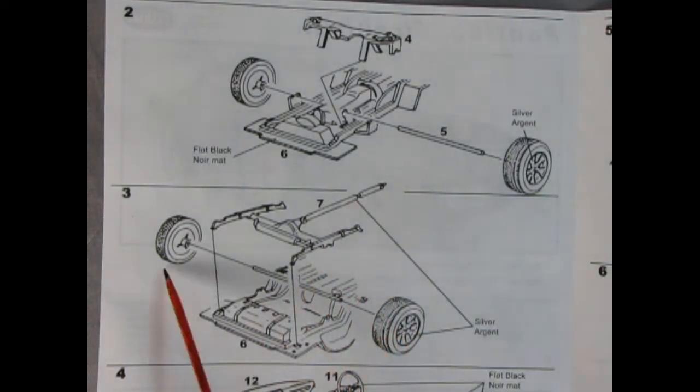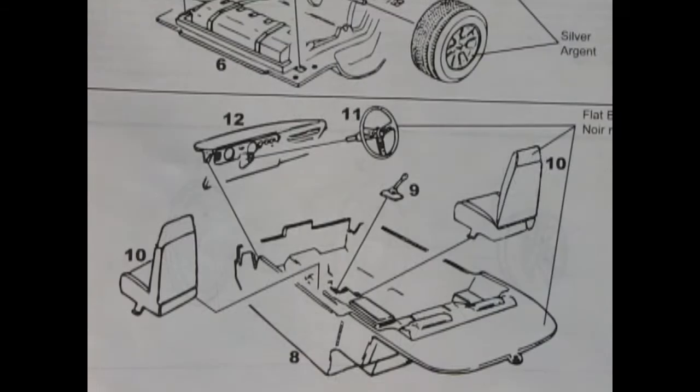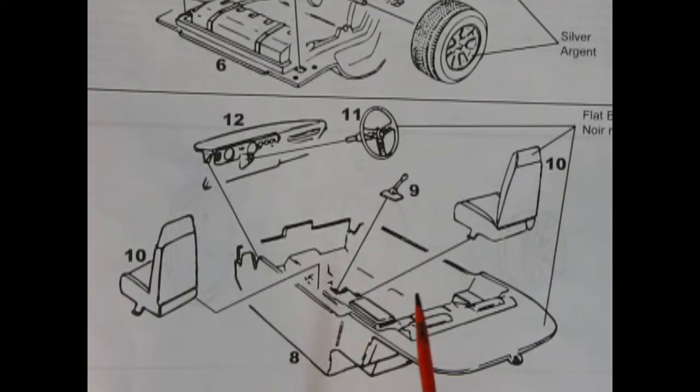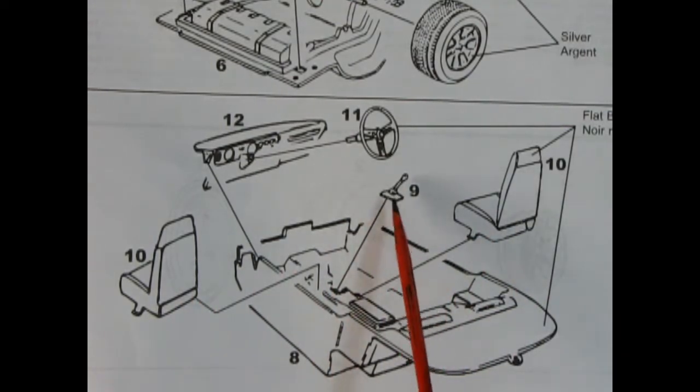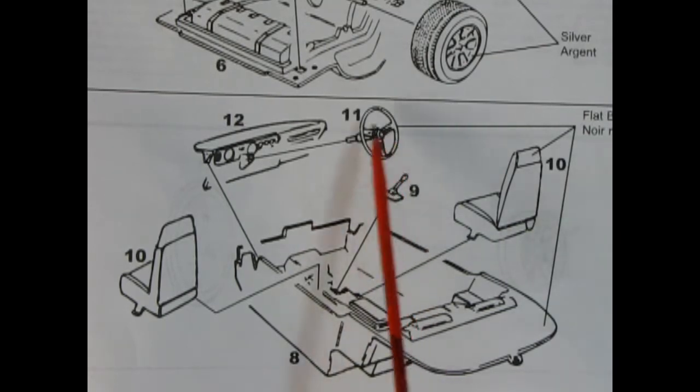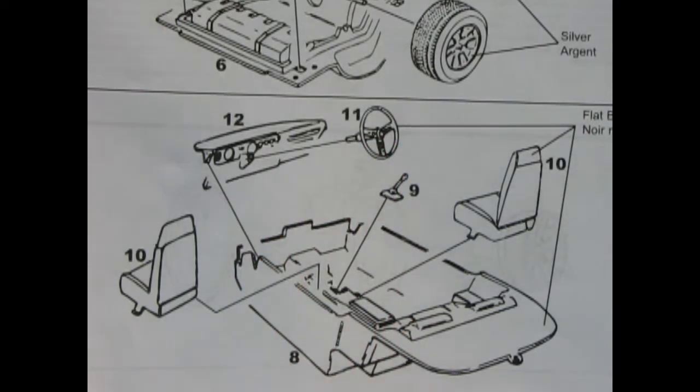There we've got our completed wheels and the axle going through there. Our next panel shows the interior going together. We've got the nice plastic tub and our two front bucket seats, as well as the shift lever and boot. And then there's our steering wheel and that nice dashboard again.